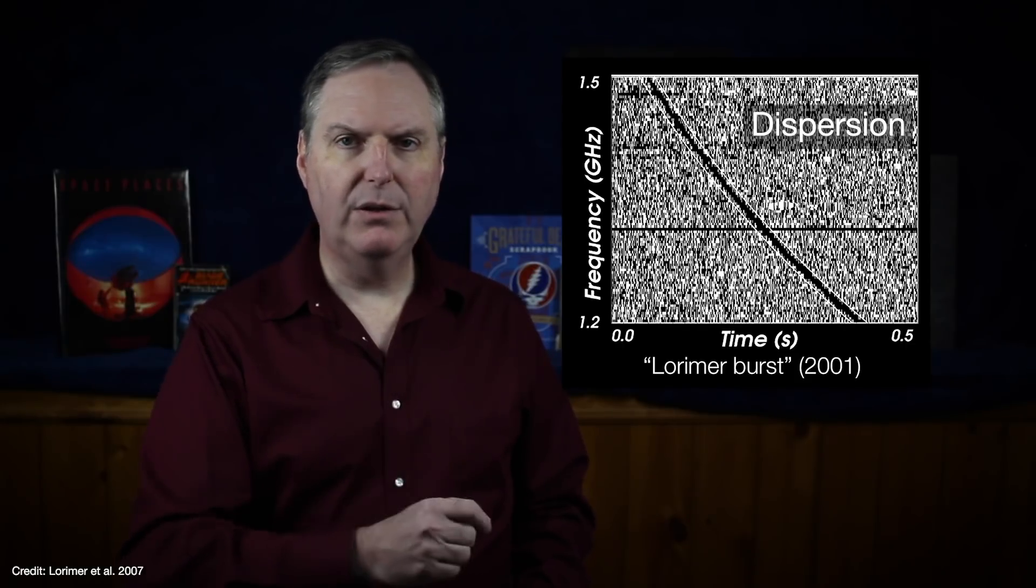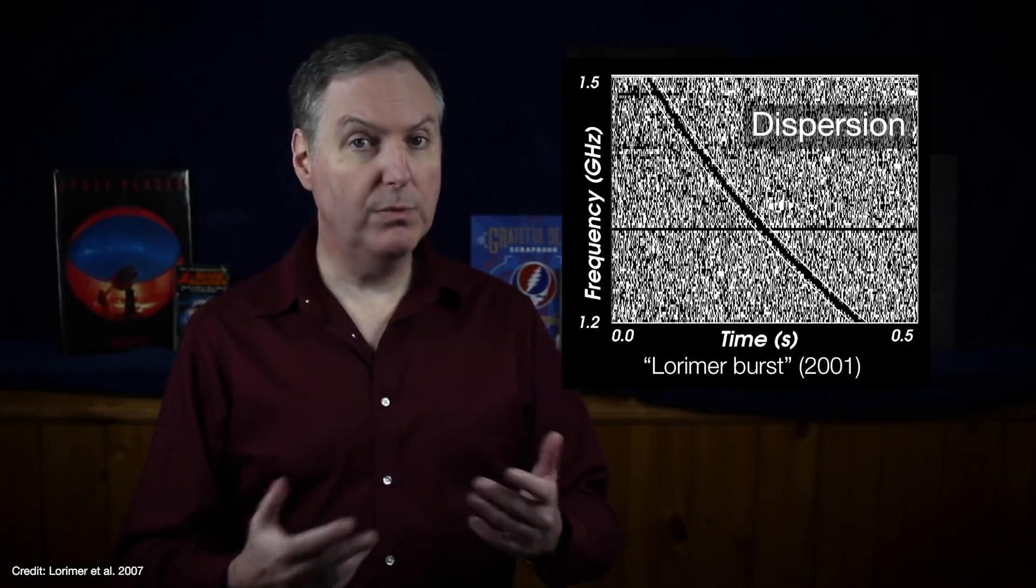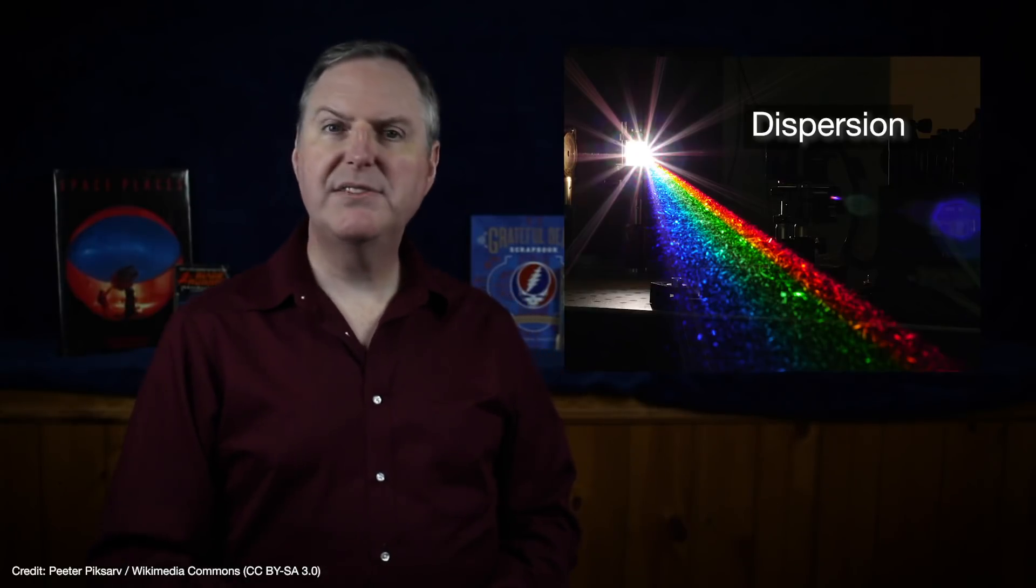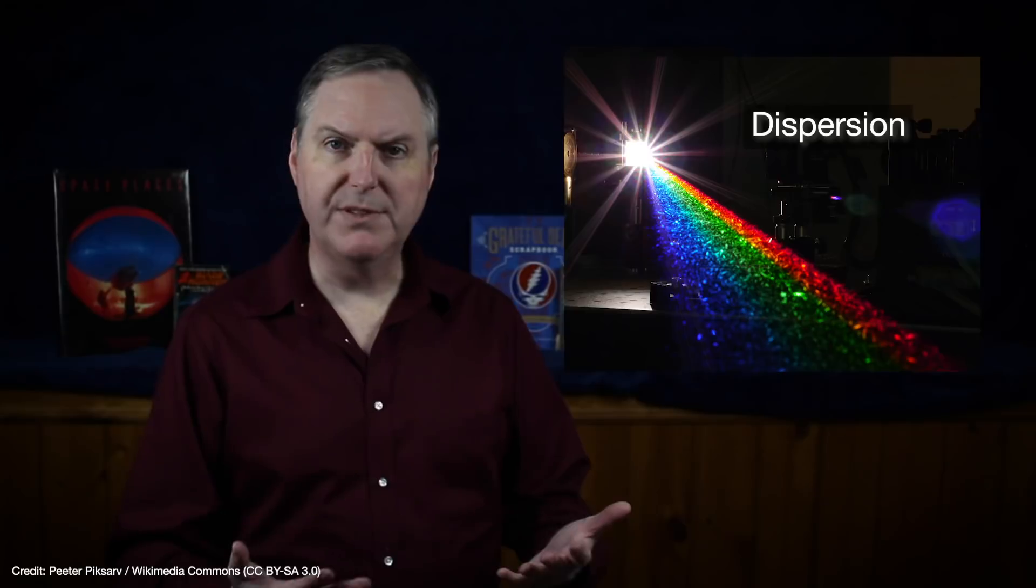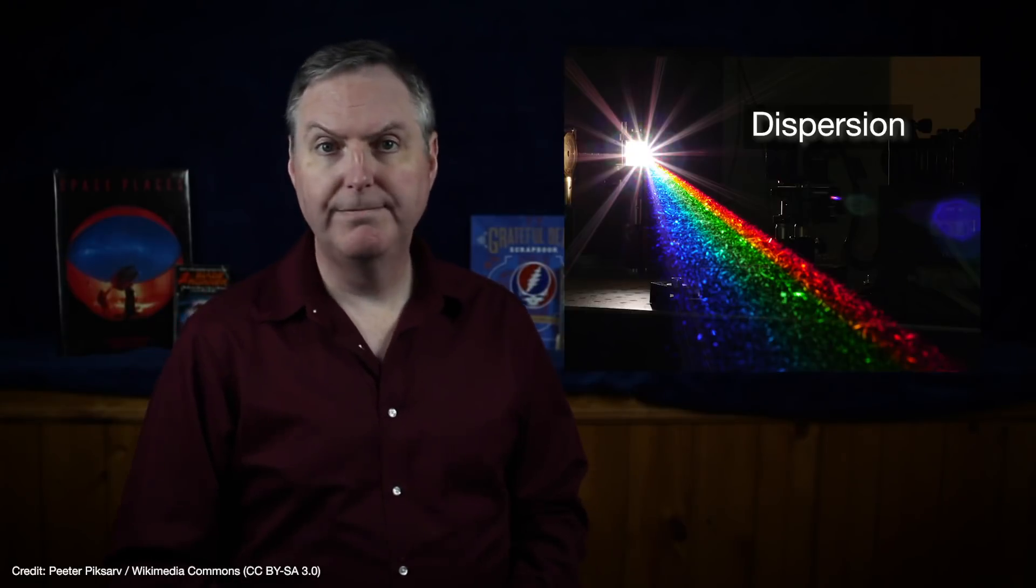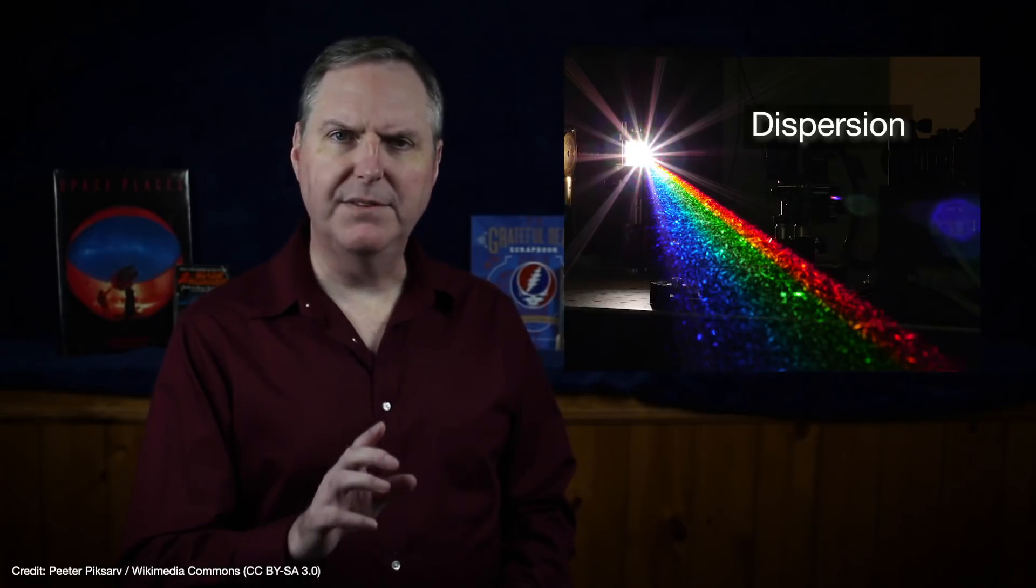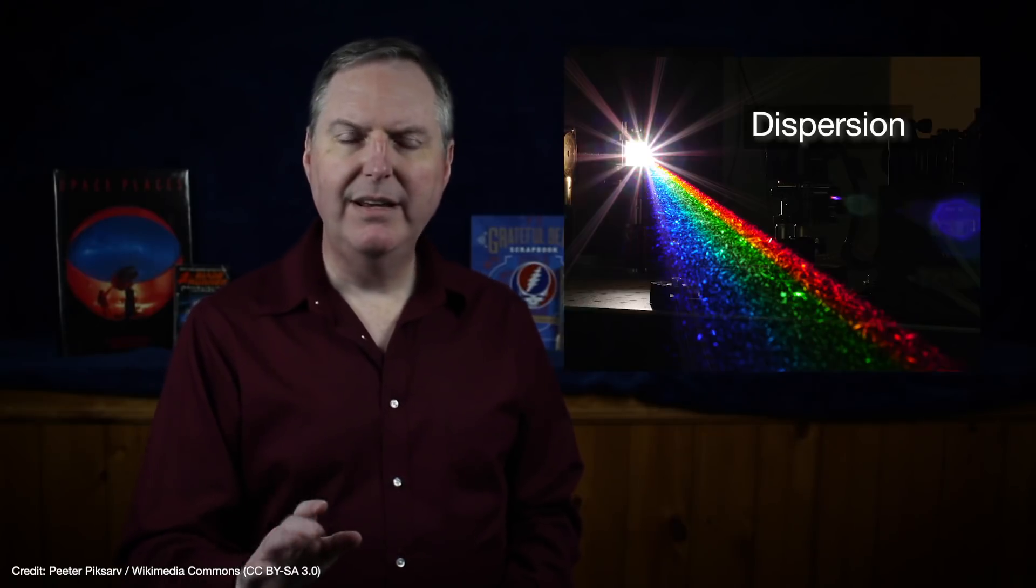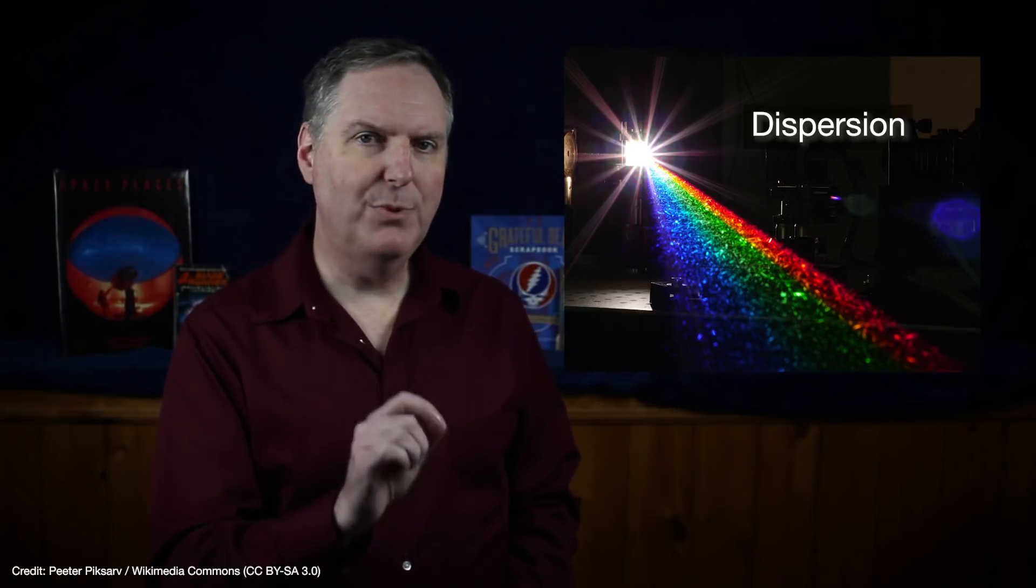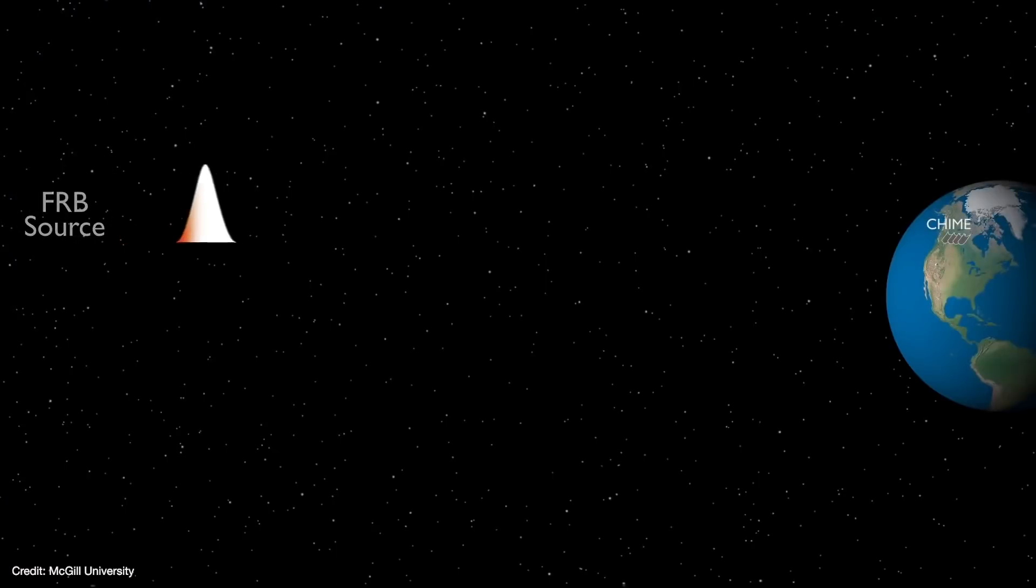This is an effect called dispersion, and it's the reason light spreads out according to its wavelength or frequency when it passes through a medium such as a prism or droplets of water. But there's another effect of dispersion that's less obvious. Not only is light separated into its component frequencies, but light at lower frequencies moves slower than light at higher frequencies.